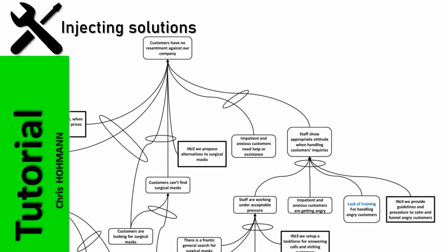We now read, if staff are working under acceptable pressure, and if impatient and anxious customers are getting angry, and if staff lack training for handling angry customers, and if this is injection 4, we provide guidelines and procedures to calm and funnel angry customers, then staff show appropriate attitude when handling customers' inquiry. If impatient and anxious customers need help or assistance, and if staff show appropriate attitude when handling customers' inquiry, then customers have no resentment against our company.